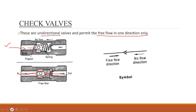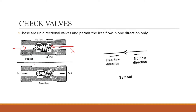Flow can pass through the check valve in the free-flow direction. However, if you want flow in the opposite direction, the spring force plus the fluid pressure on the poppet presses the poppet seat closed. So no flow is possible in the opposite direction. Flow is only permitted in one direction — that is the check valve.